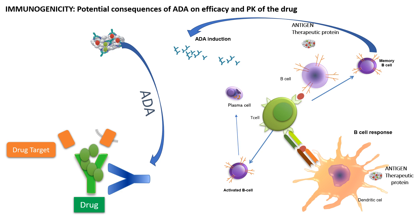In other cases, binding outside the functional site can impact the metabolism and excretion of the drug. One common scenario is where anti-drug antibodies accelerate excretion of the drug, which decreases efficacy even though the drug can still bind the target. So you could have anti-drug antibodies in the blood, negative neutralizing antibody results, but still an impact on efficacy because the drug is being excreted faster.